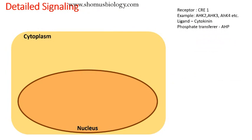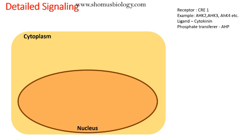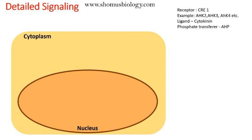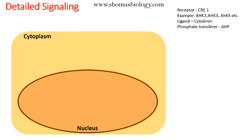Now let's see how the complete cytokinin signaling pathway works. To understand it, we need to know the receptor, the ligand, and the other components involved. The ligand here is cytokinin itself. The CRE1 protein — full form: Cytokinin Response 1 — acts as the receptor, and this CRE protein contains cytokinin-binding domains known as CHASE domains.